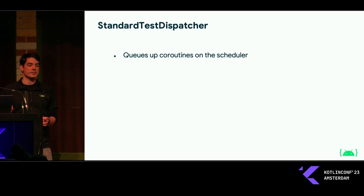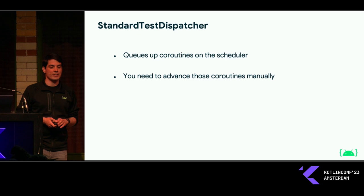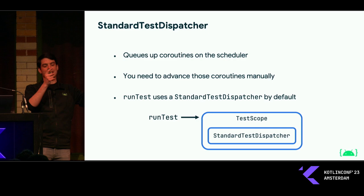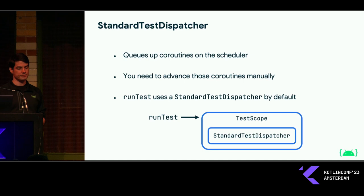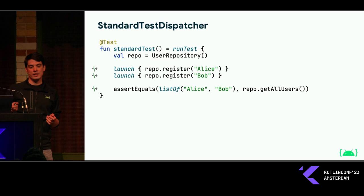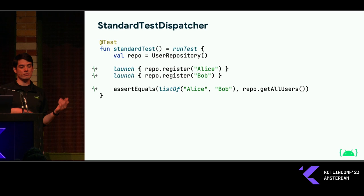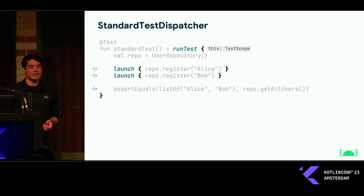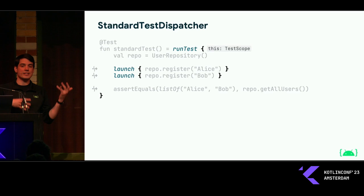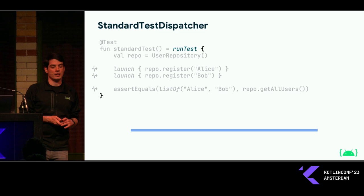StandardTestDispatcher queues up coroutines using the scheduler. You need to either yield the test thread to them or advance them manually. This is what runTest will use by default — when you call runTest, it creates a TestScope, which will create a StandardTestDispatcher by default if you don't specify anything else. So let's go back to this test where we create a repository and launch two new coroutines to register Alice and Bob, then check that the list of users contains them. These launches within the test body are called on the receiver of the lambda passed into runTest, which is the TestScope itself, so we inherit the StandardTestDispatcher.